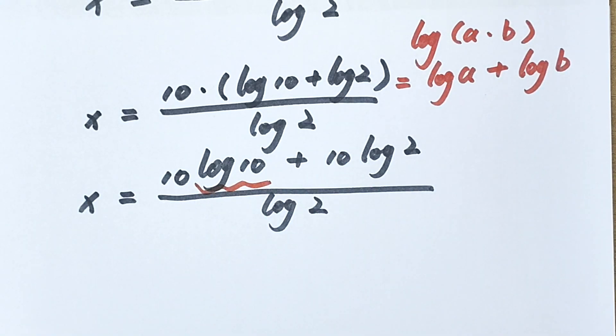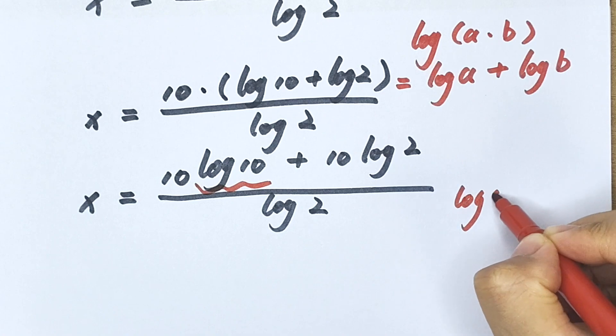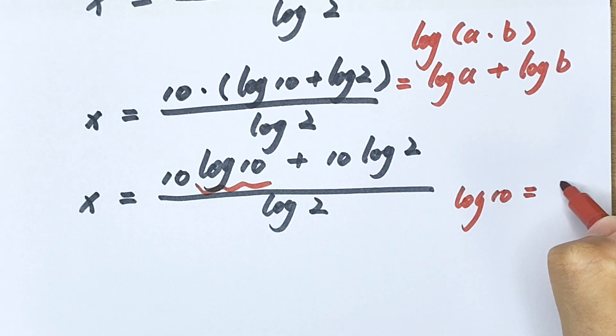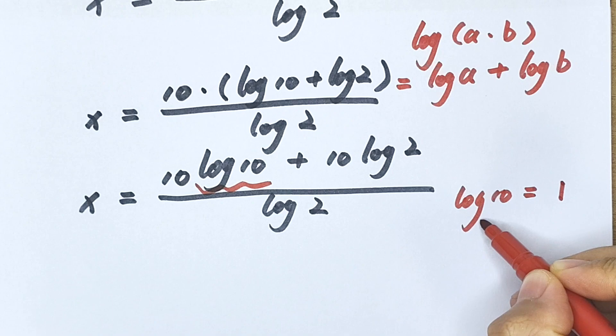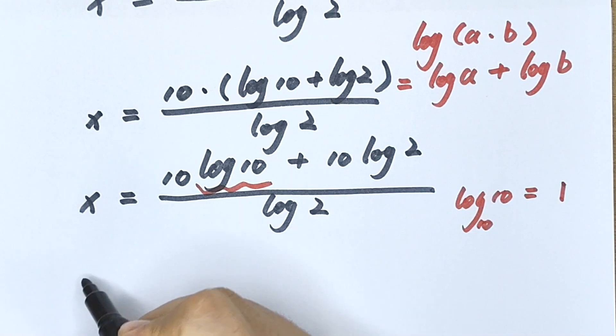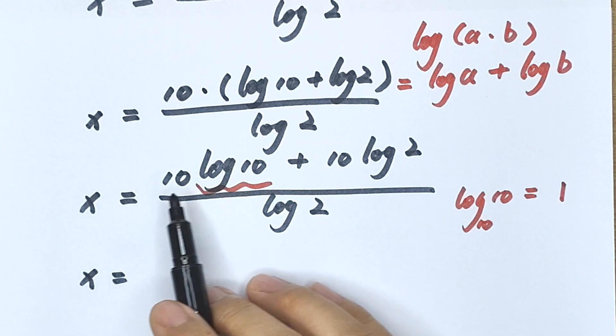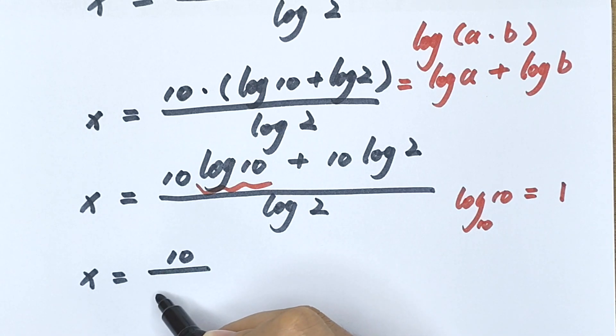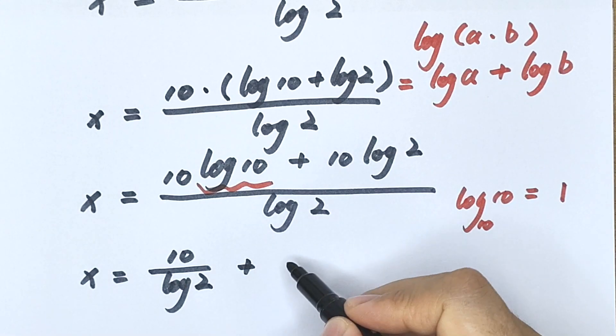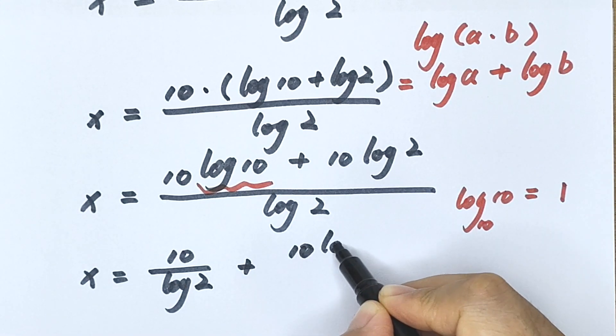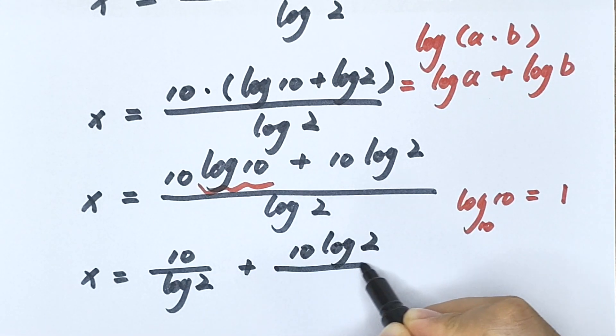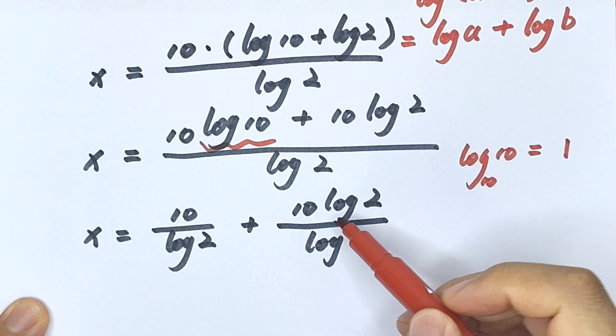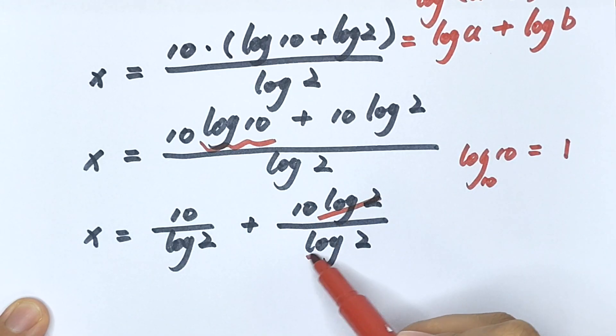Here we know log 10 equals 1 because the base is 10. So x equals 10 divided by log 2 plus 10 log 2 divided by log 2, and this will cancel with log 2.